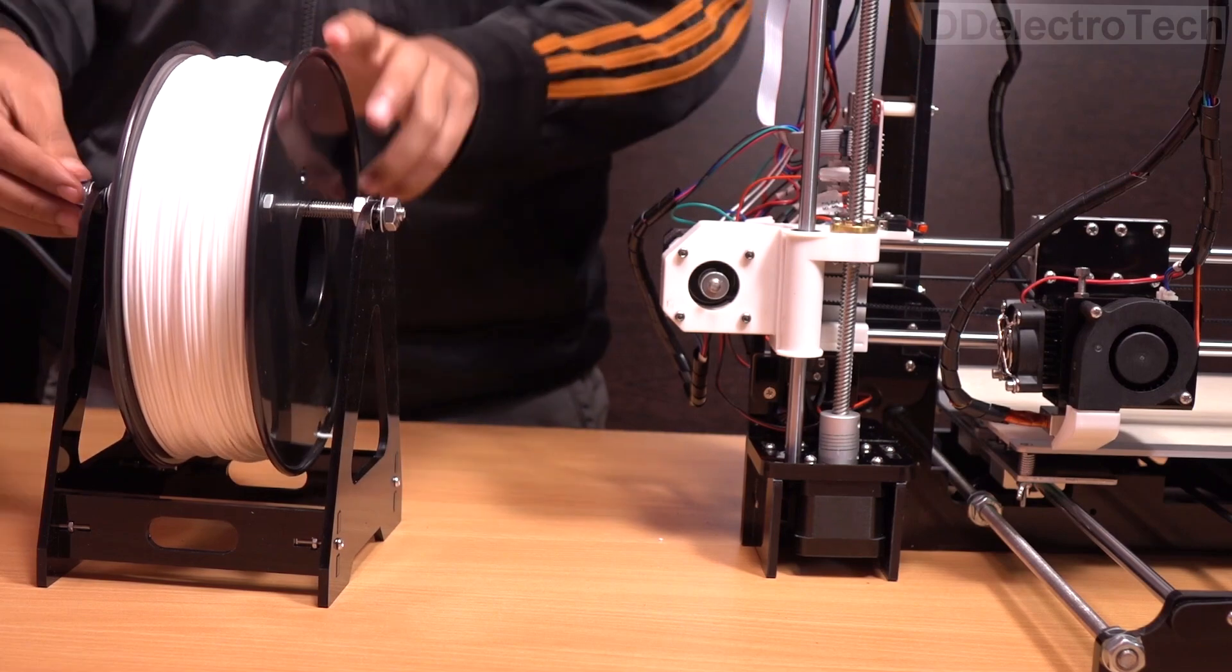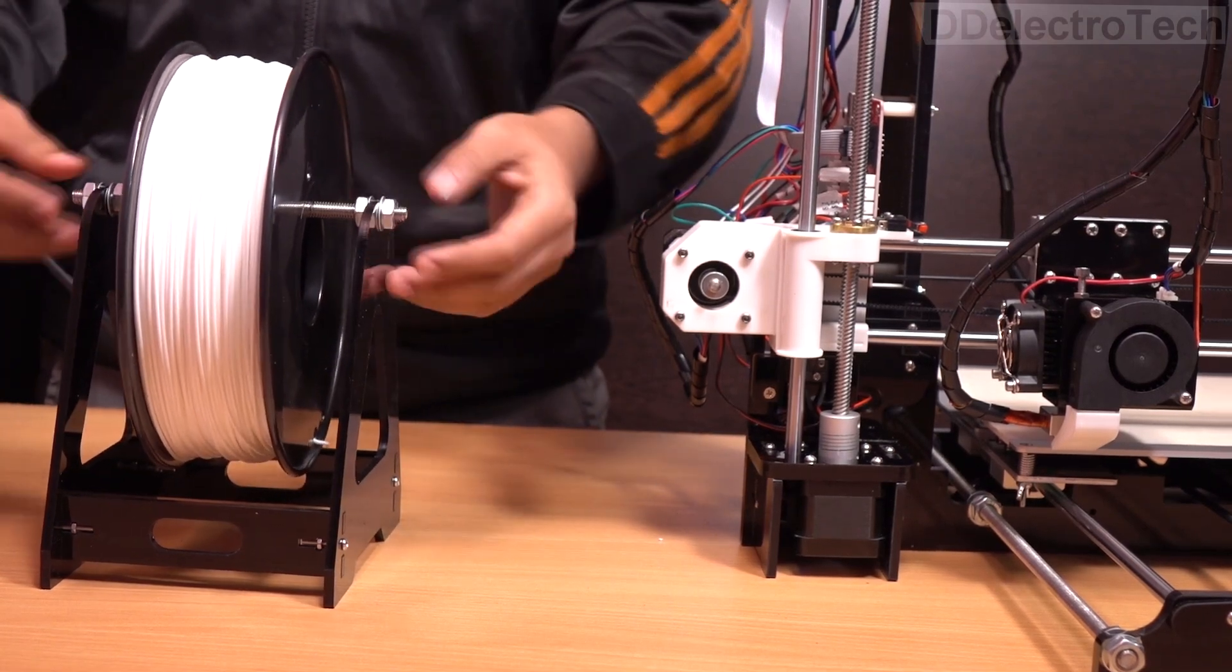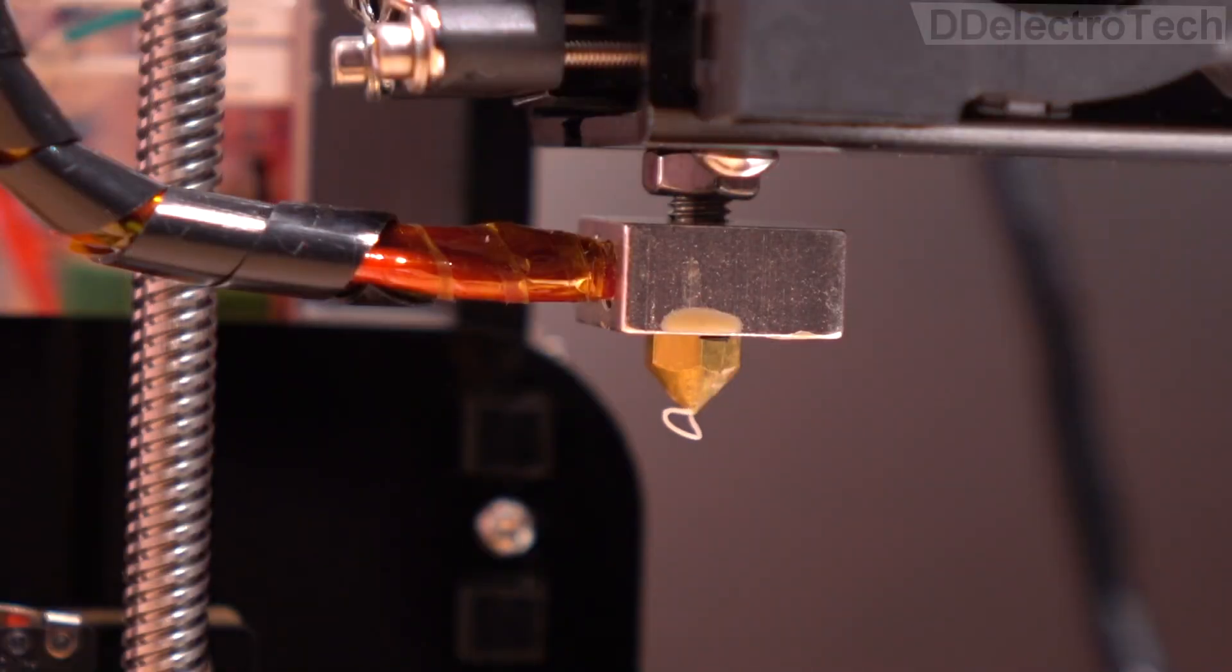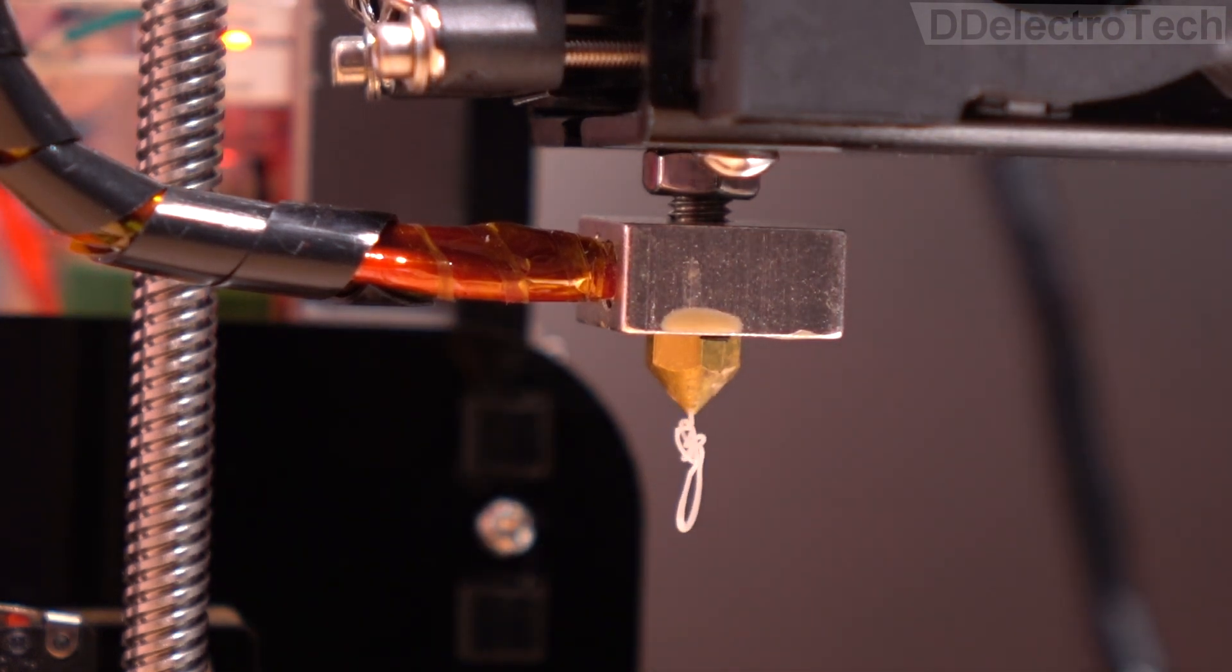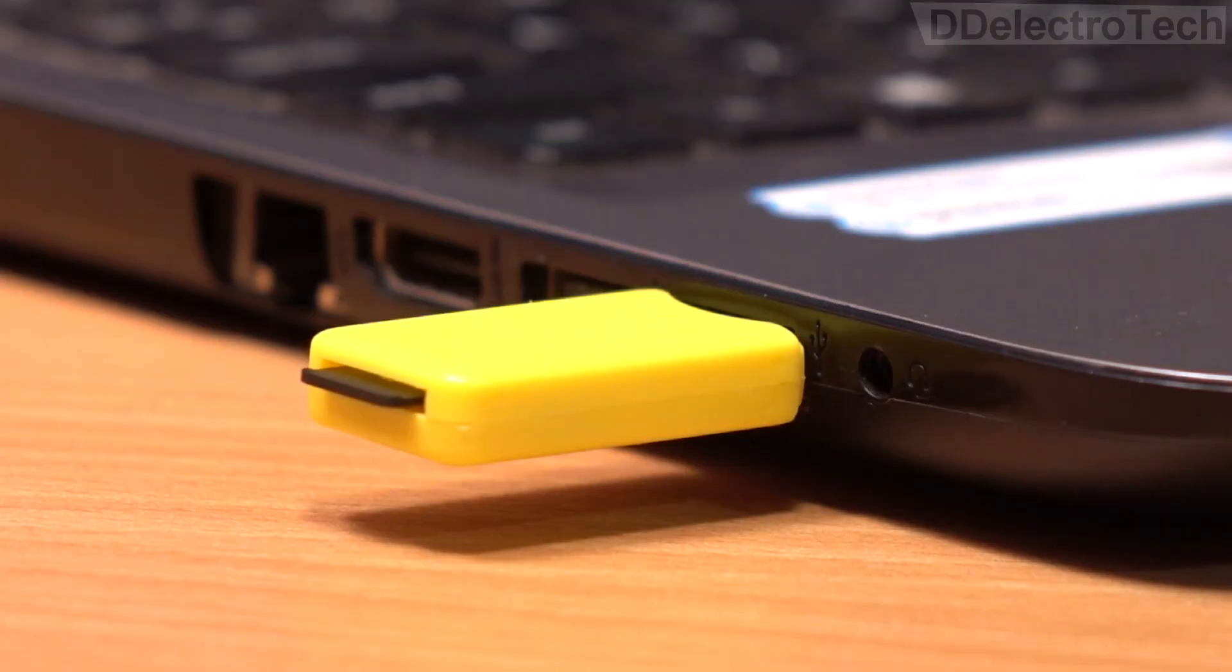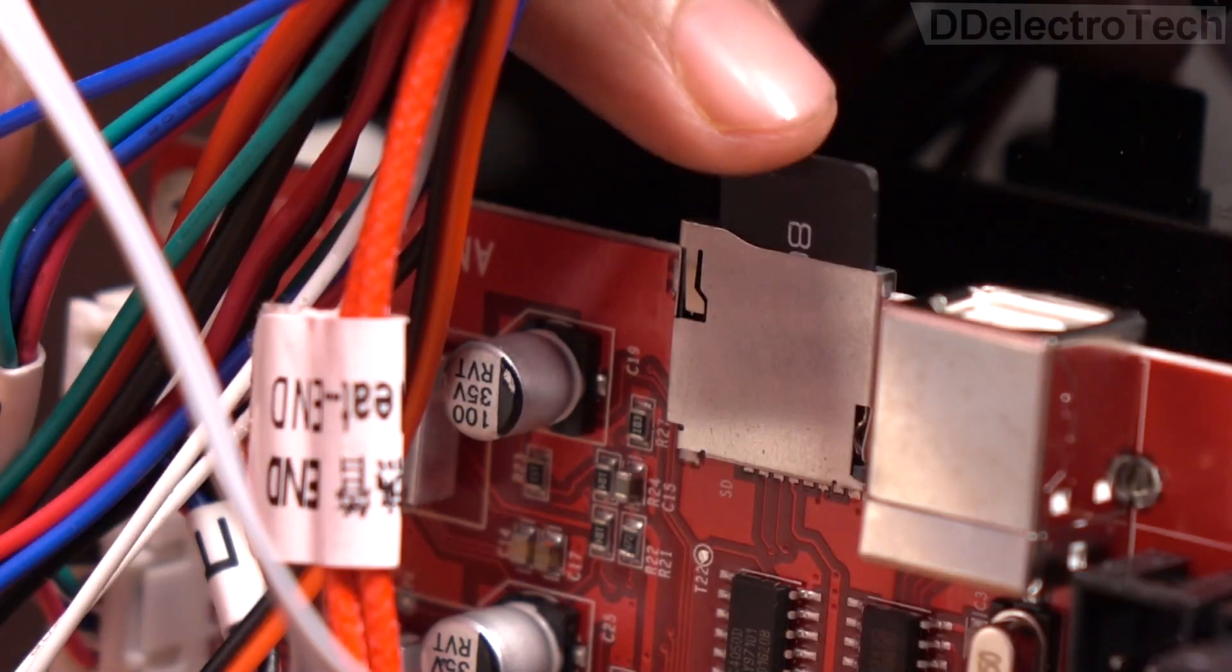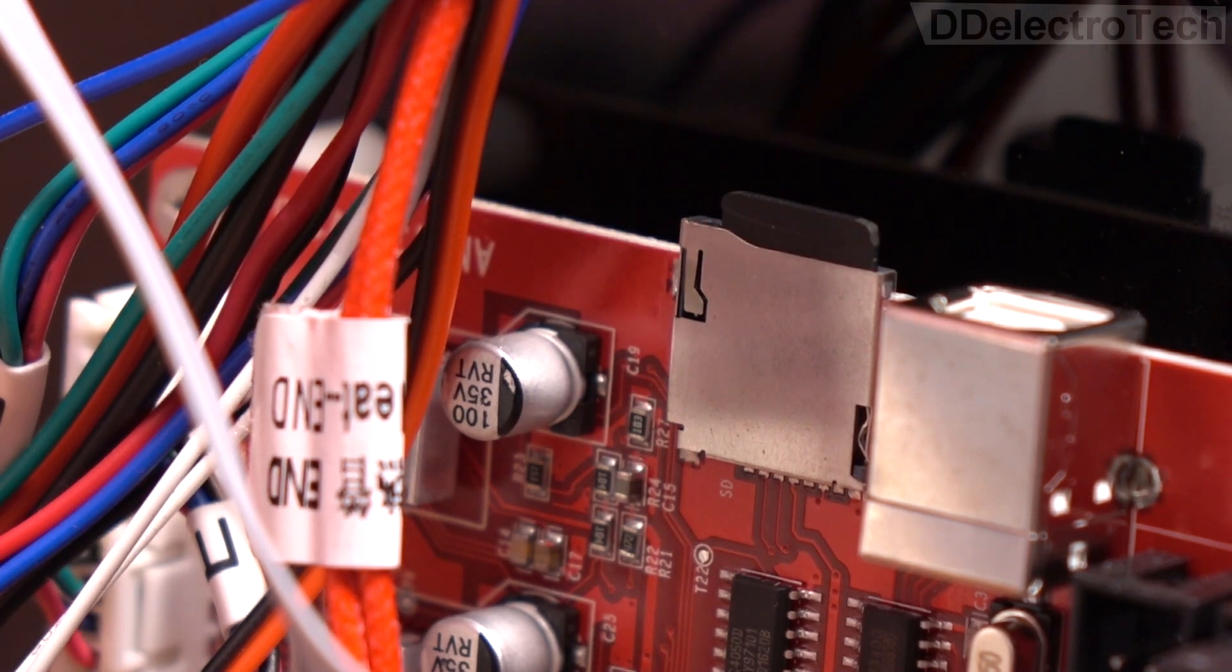I am using 1.75mm PLA for printing. We attach the PLA inside the extruder. Finally, it's time to print something. So let's load a 3D model onto the SD card and start printing.